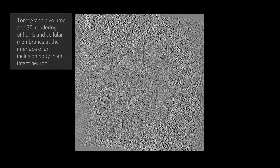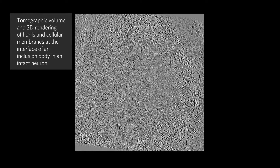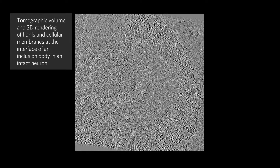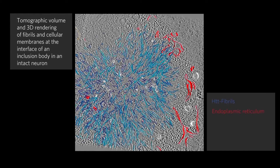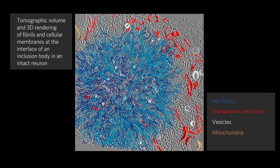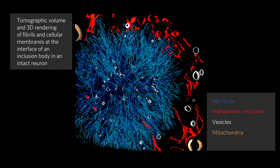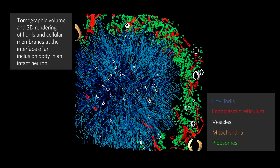In this other example, we studied a polyQ inclusion within a mouse neuron. It looks very similar to that of HeLa cells, with the polyQ fibrils in blue, surrounded by ER membranes in red, with which they interact extensively. Interestingly, large macromolecules such as ribosomes, shown in green, are excluded from the aggregate.